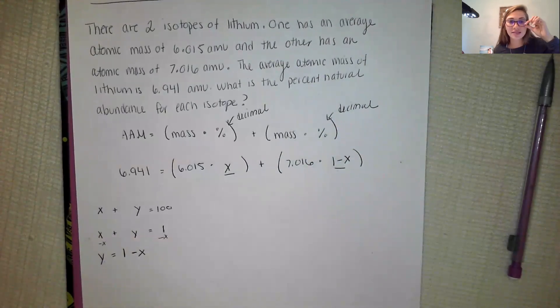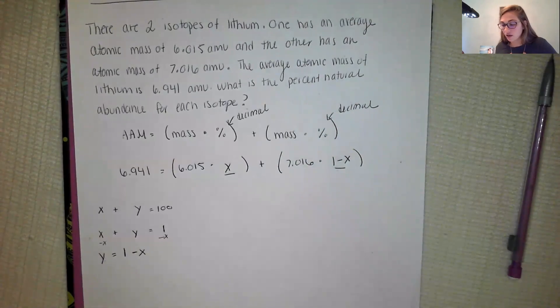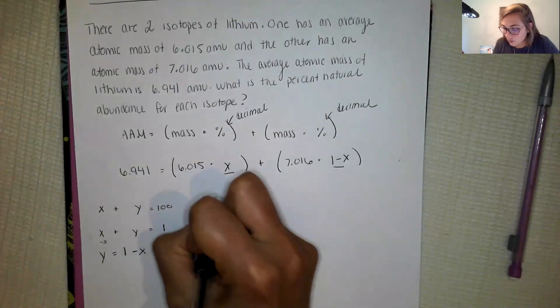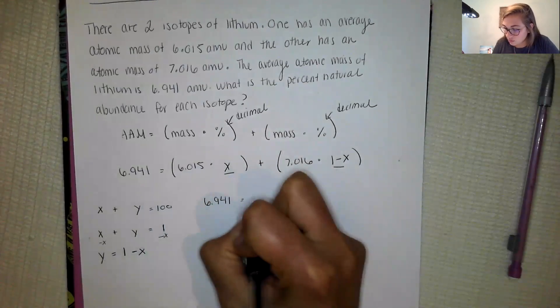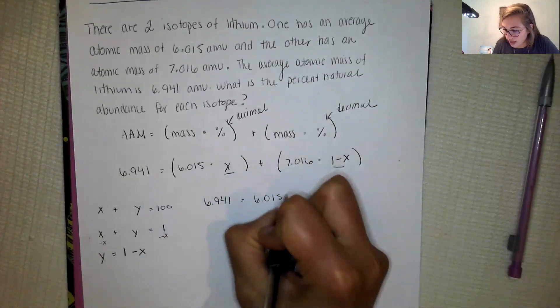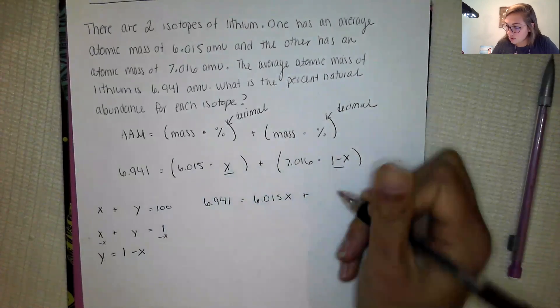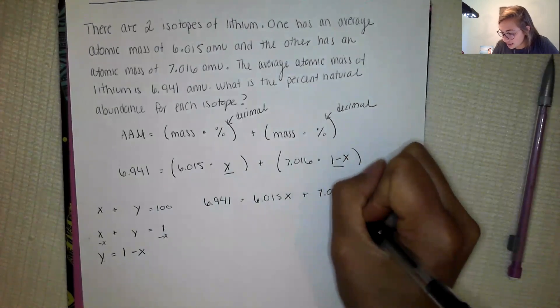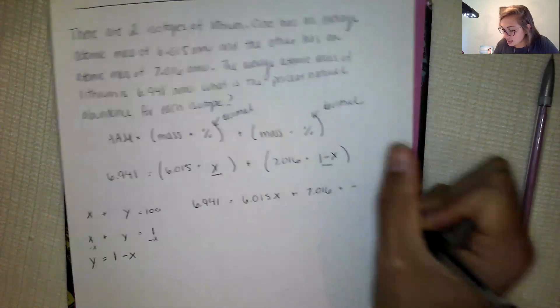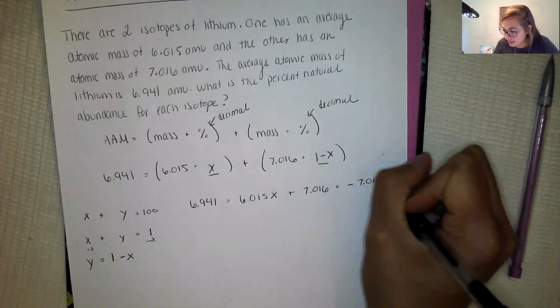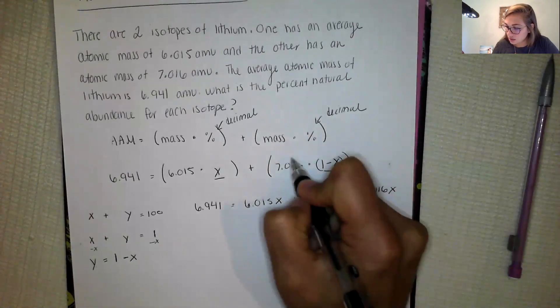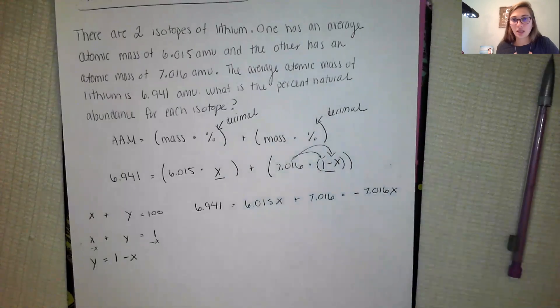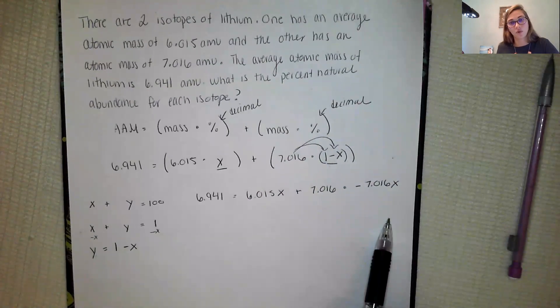So now I only have X's in my problem and I can solve. So I have 6.941 is equal to 6.015X plus 7.016 times (1 minus X), so I just distributed in here in order to get my equation, which gives 7.016 minus 7.016X.